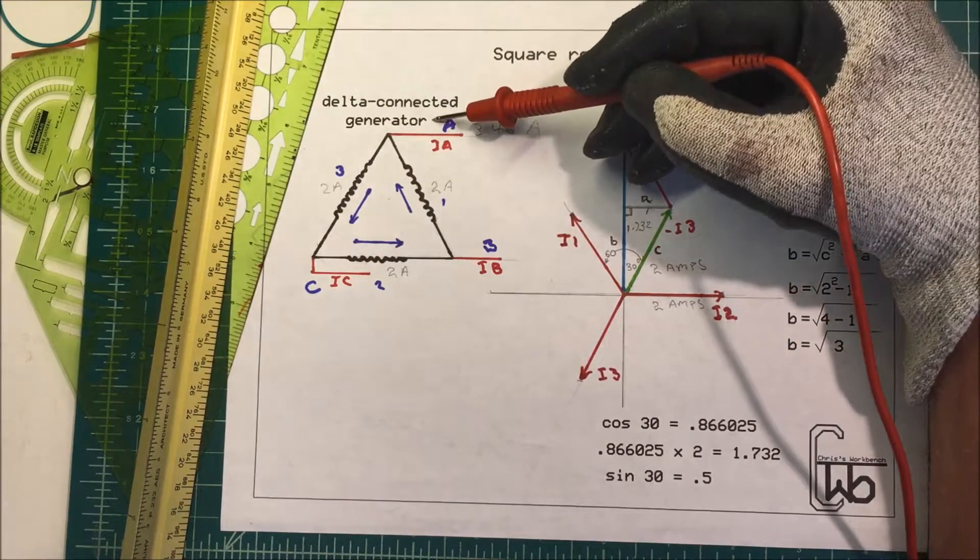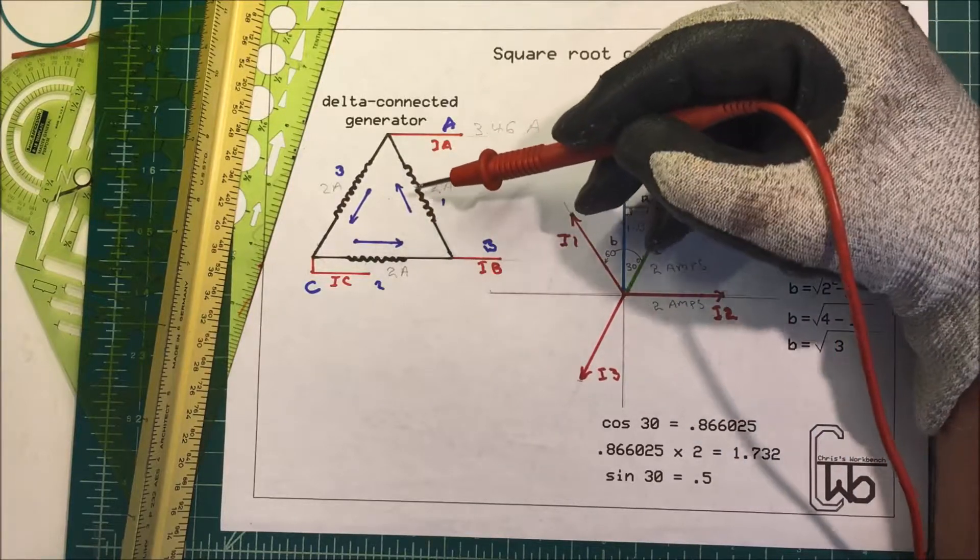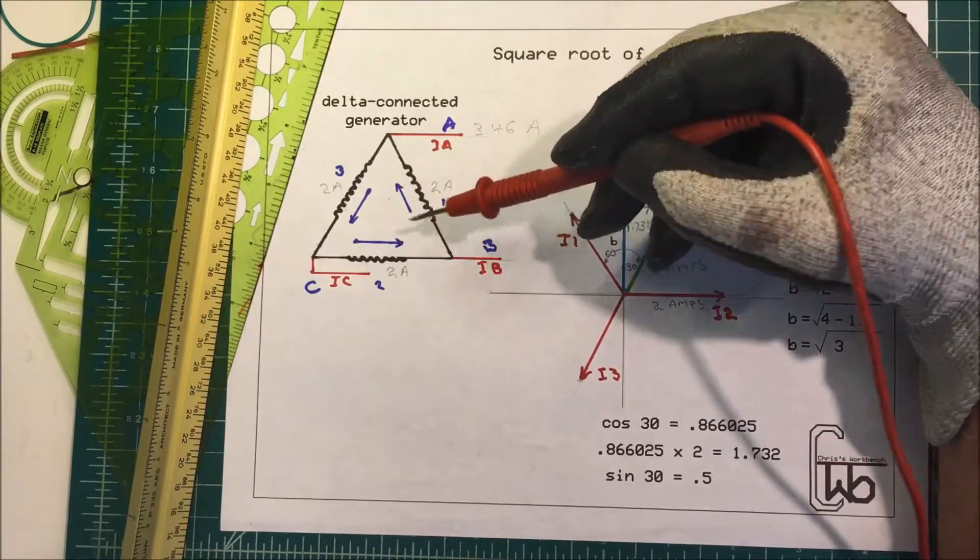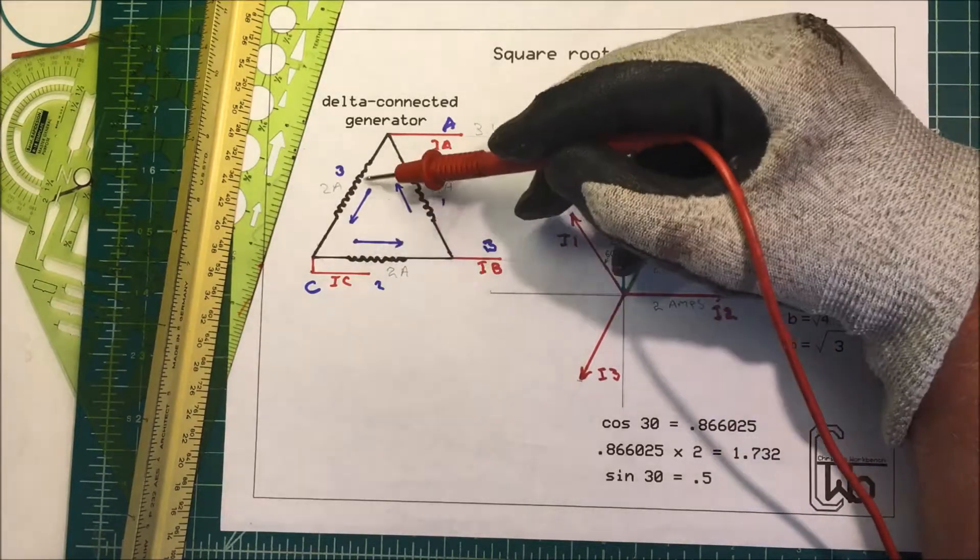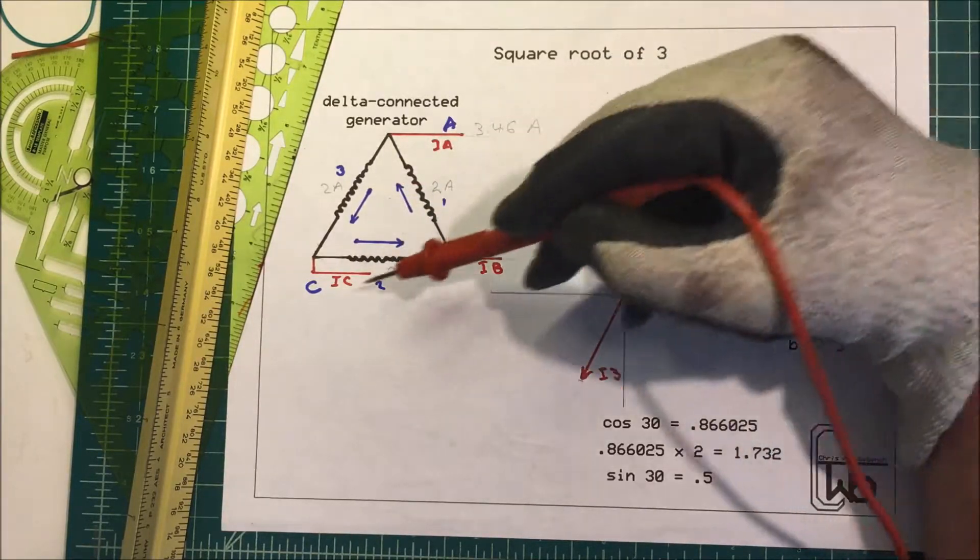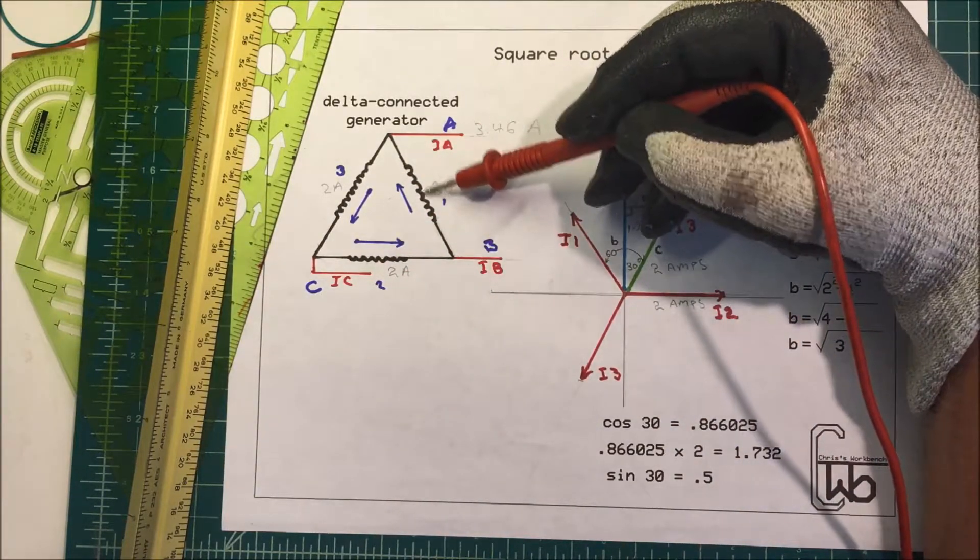Let's take a look at a delta-connected generator. We can see that the coils are connected in delta and they're physically 120 degrees apart in the generator and electrically 120 degrees apart. This is coil one, two, and three - phase A, B, and C - and the current flows in the counterclockwise direction.